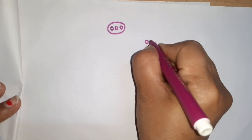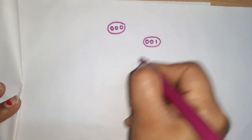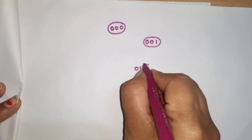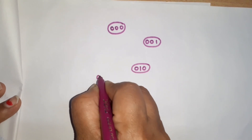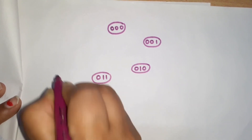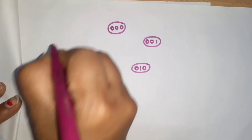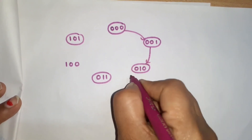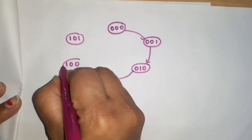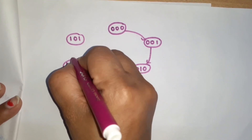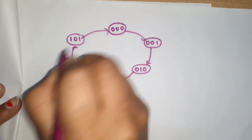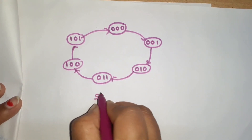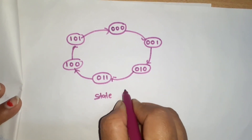For the state diagram: starting at 000, the counter goes to 001, then 010, then 011, then 100, then 101. From 101 (which is 5), it goes back to the initial value 000. So the sequence is: 0 → 1 → 2 → 3 → 4 → 5 → 0. This is the state diagram for the Mod 6 counter.